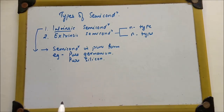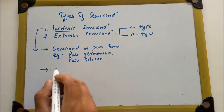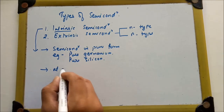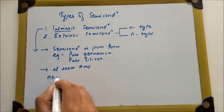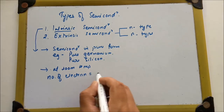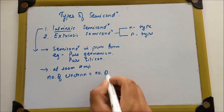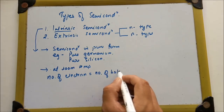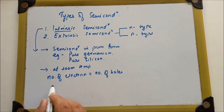Another important point of intrinsic semiconductor is that at room temperature, the number of electrons is equal to the number of holes. This is an important point: in an intrinsic semiconductor at room temperature, number of electrons equals number of holes.